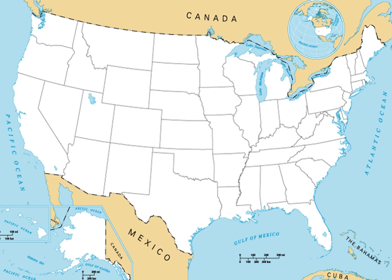Brazil is the only country that is larger in total area than the contiguous United States but smaller than the entire United States, while Russia, Canada, and China are the only three countries larger than both. The 2010 census population of this area was 306,675,006, comprising 99.33% of the nation's population, and a density of 103.639 inhabitants per square mile, compared to 87.264 per square mile for the nation as a whole.